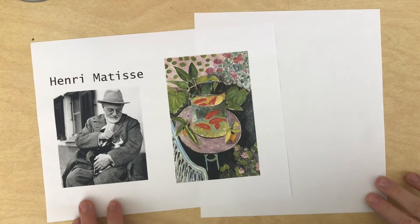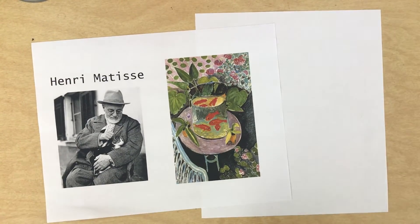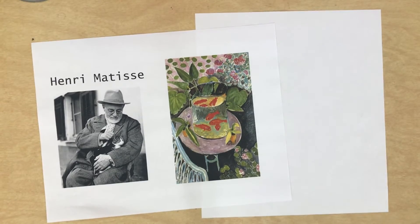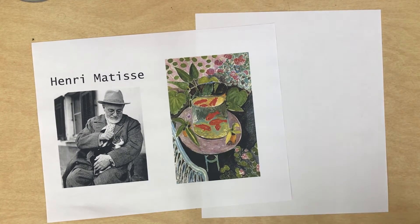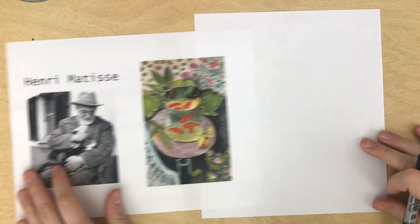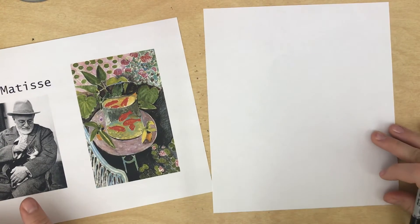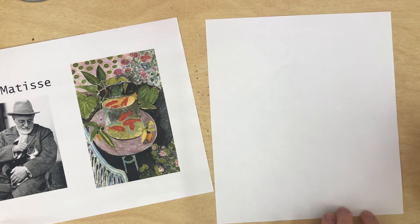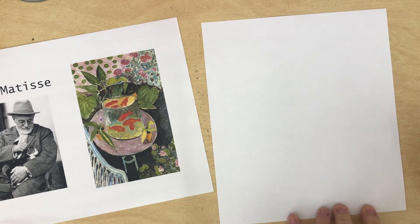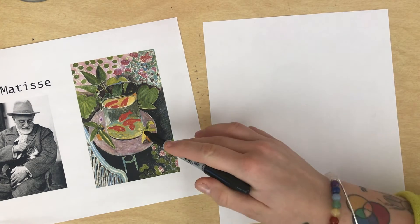Hello, my most amazing artists. So this is Henri Matisse, and we are going to draw his fish bowl, or fish cylinder. This is a cylinder shape that he puts his fish in in his painting. So let's get started with Matisse and our fish cylinder.